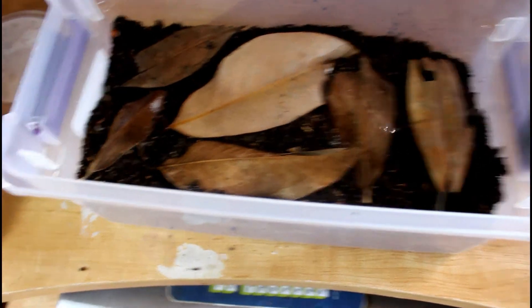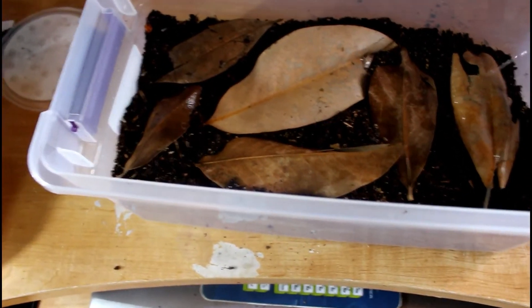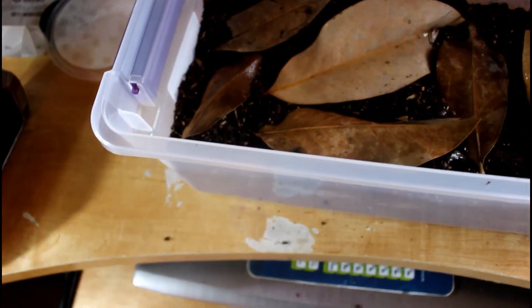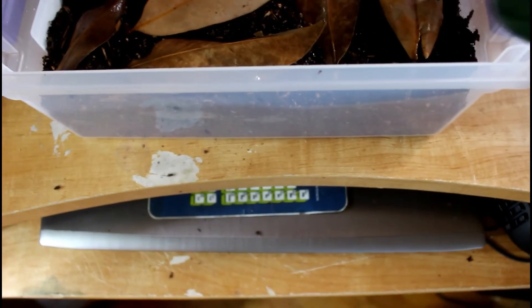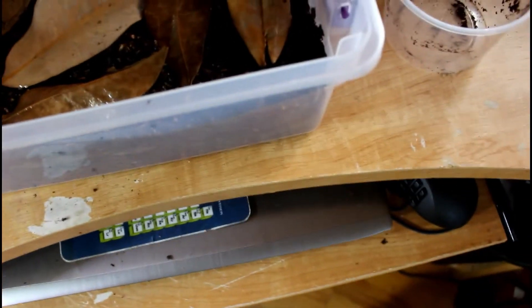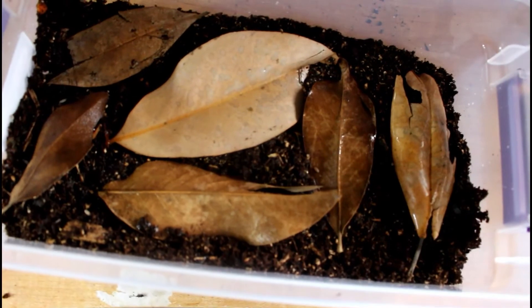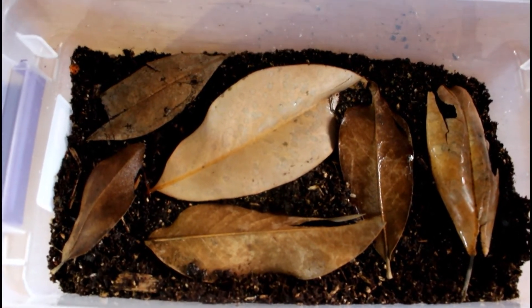So with these guys, they like it very nice and wet, but not sopping wet. They just like it humid. So what we're going to do is we're going to mist these guys a little bit and then we're going to stick them in a warm, dark place. These guys are actually going to the top of my closet with the rest of my isopod collection.